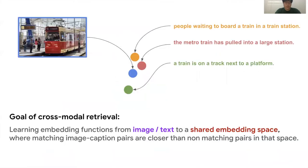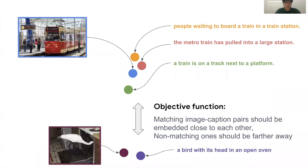Cross-Modal Retriever aims to find the mapping from image and text domain to the shared embedding space. The mapping is trained by deep metric learning like triplet loss or contrasting loss. It makes matched image-caption pairs be closer and unmatched pairs be further away.